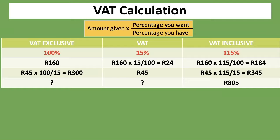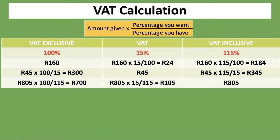For the last one, we are given the VAT Inclusive amount of 805 RAND, and we have to calculate the VAT Exclusive and the VAT. VAT Inclusive is 115%. For VAT Exclusive: 805 RAND multiplied by 100% divided by 115%, which gives us 700 RAND. For VAT: 805 RAND multiplied by 15% divided by 115%, which gives us 105 RAND. Adding 700 plus 105 gives you 805 RAND. Always remember: your VAT Inclusive is always higher than your VAT Exclusive, so check that to ensure you did it correctly.